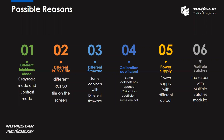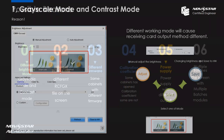The fifth possible reason is power supply. If the power supply output is different, we need to provide the same voltage for all cabinets. Sometimes some cabinets work with a different voltage, so the brightness will differ from other cabinets. The last possible reason is multiple batches — a screen with multiple batch modules. This reason will also cause the different brightness problem. Now we have talked about all the possible reasons; next, let's see how to deal with them one by one.